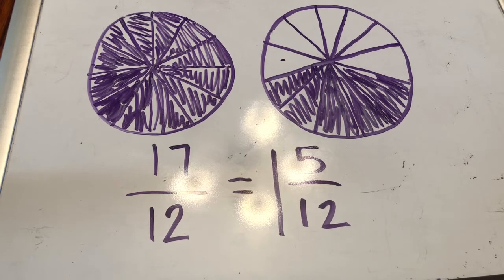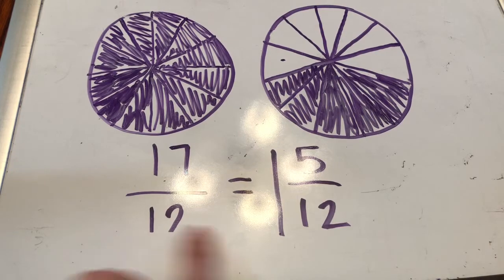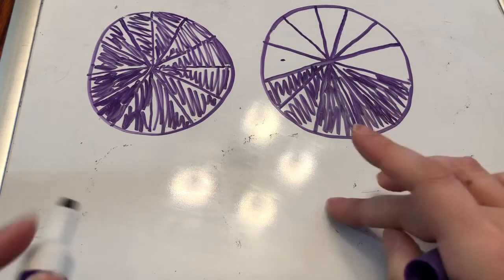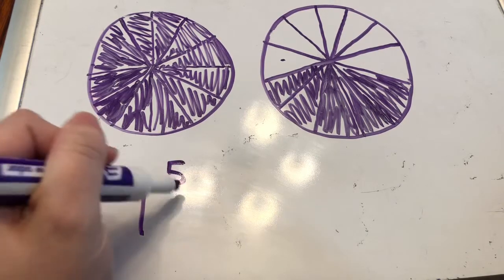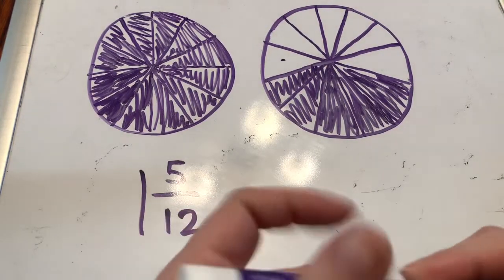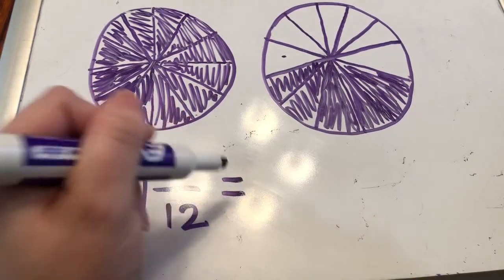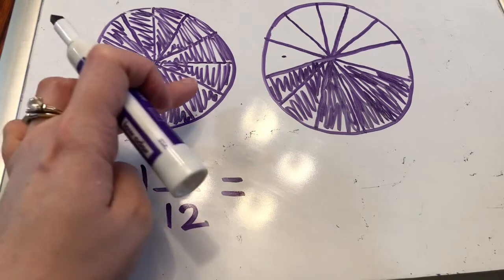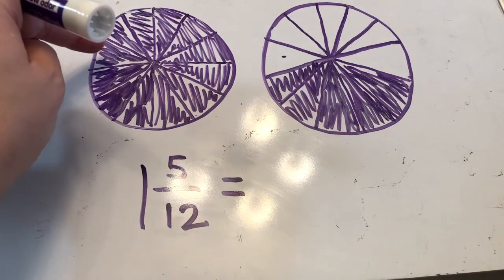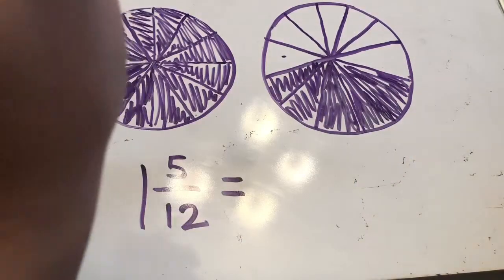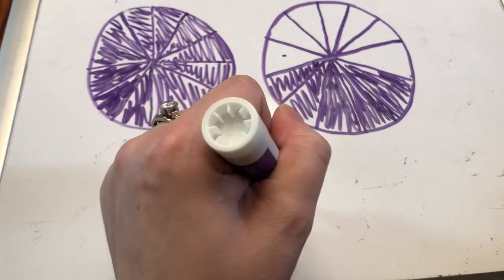Now let's see what it looks like when we need to convert from a mixed number to an improper fraction, using the same example. Let's say it gives me one and five twelfths, and I have to convert it into an improper fraction where my numerator is higher than my denominator. All I have to do is count the number of twelfths colored in: one, two, three, four, five, six, seven, eight, nine, ten, eleven, twelve — twelve twelfths — thirteen, fourteen, fifteen, sixteen, seventeen. So this is seventeen twelfths that are colored in.